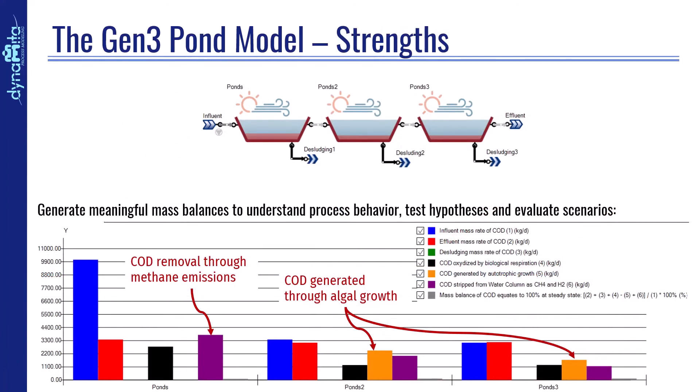Generating mass balances for COD, phosphorus, nitrogen, even oxygen and the algae is now as simple as clicking a button. Here, for example, we see that for this three-pond system, the relative contribution of methane emissions in purple and algal growth in orange is shown for the overall COD balance.